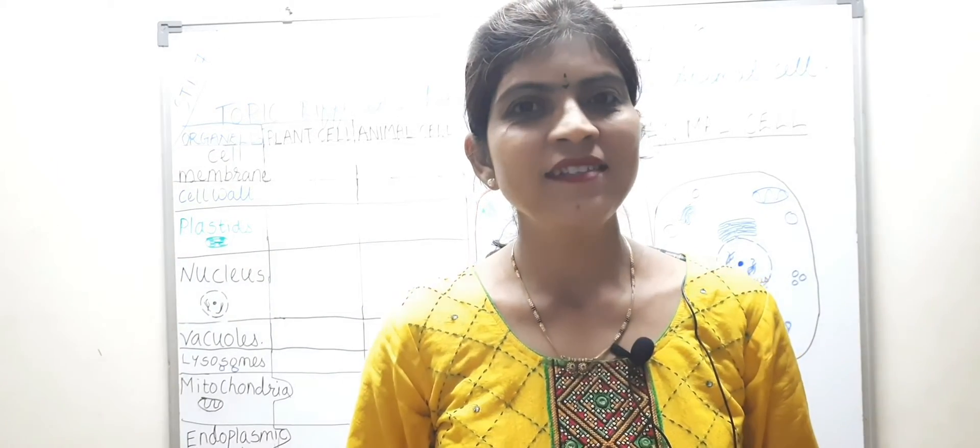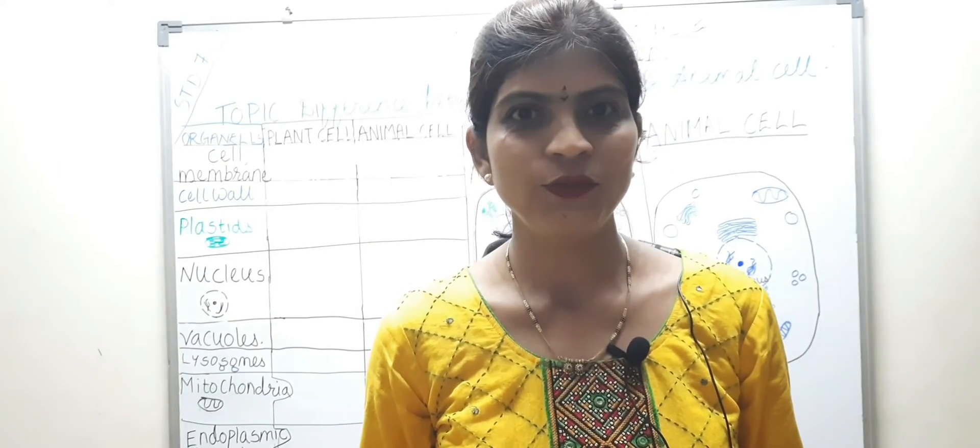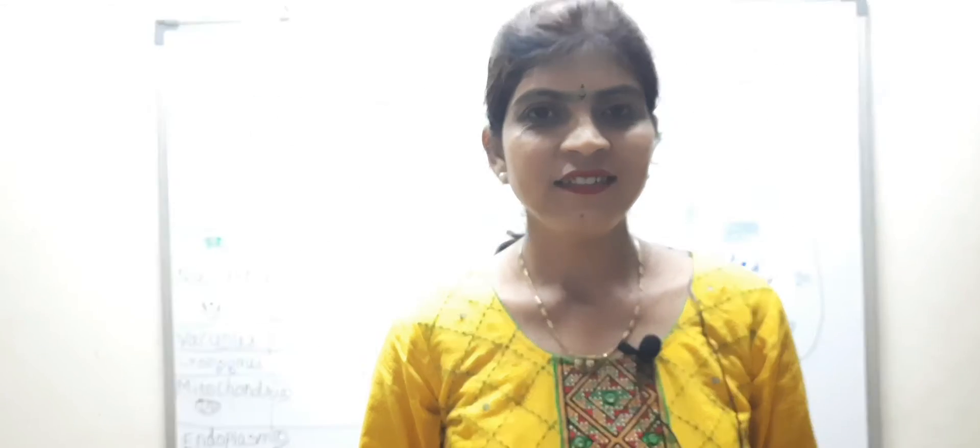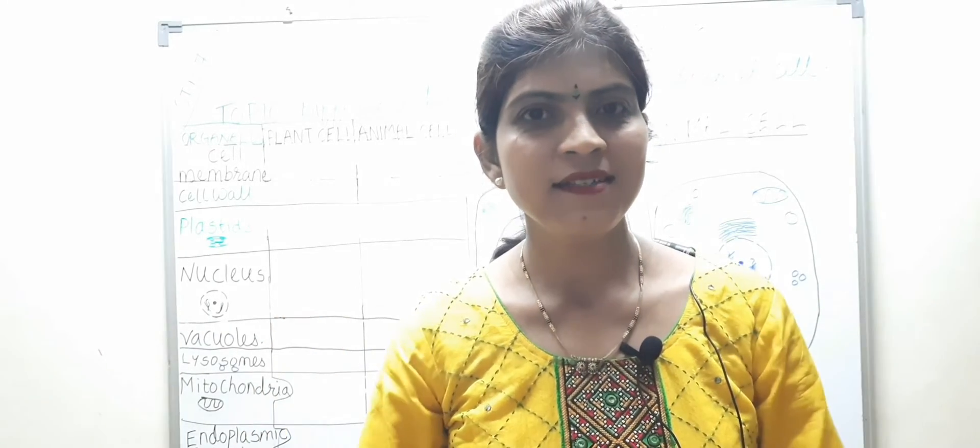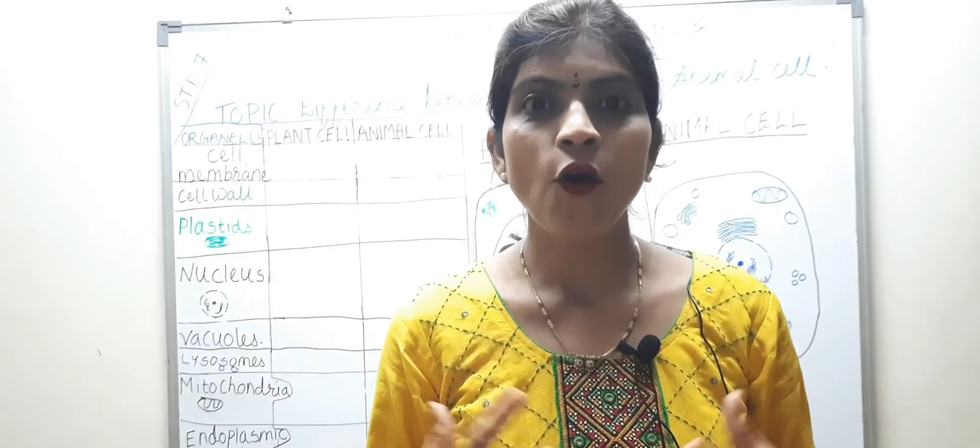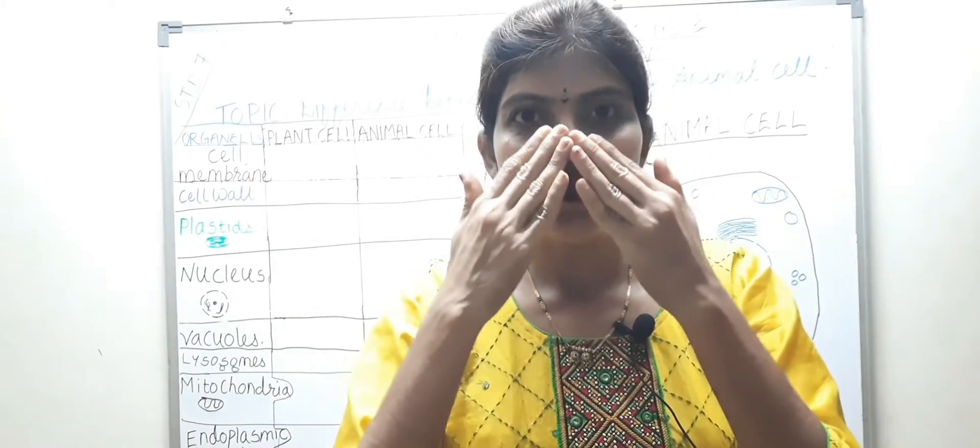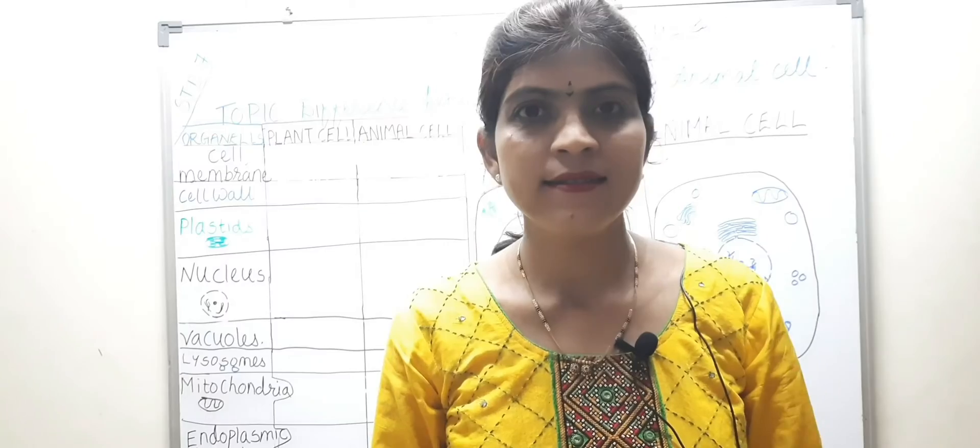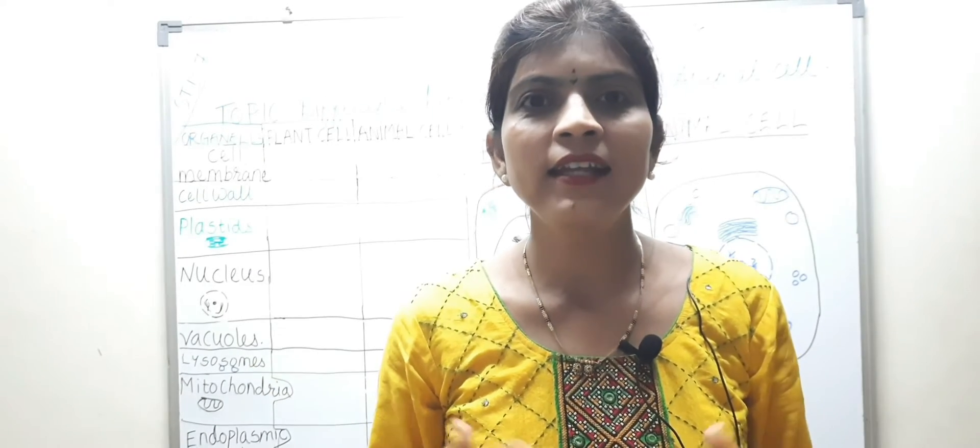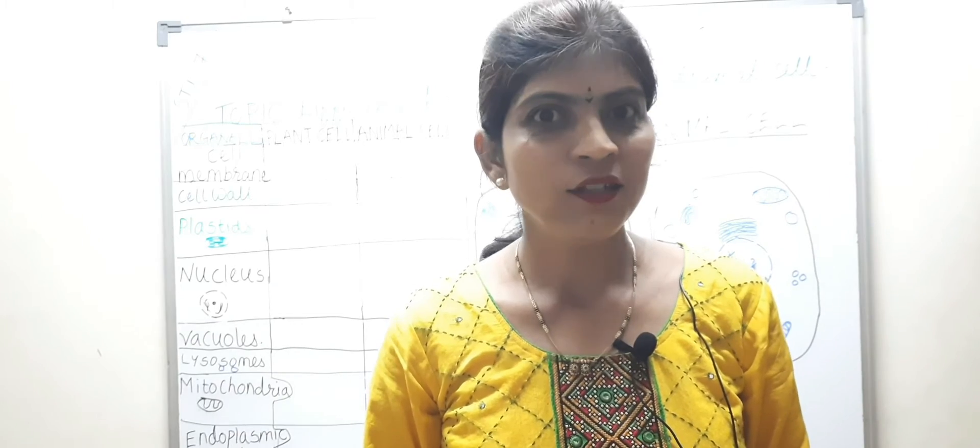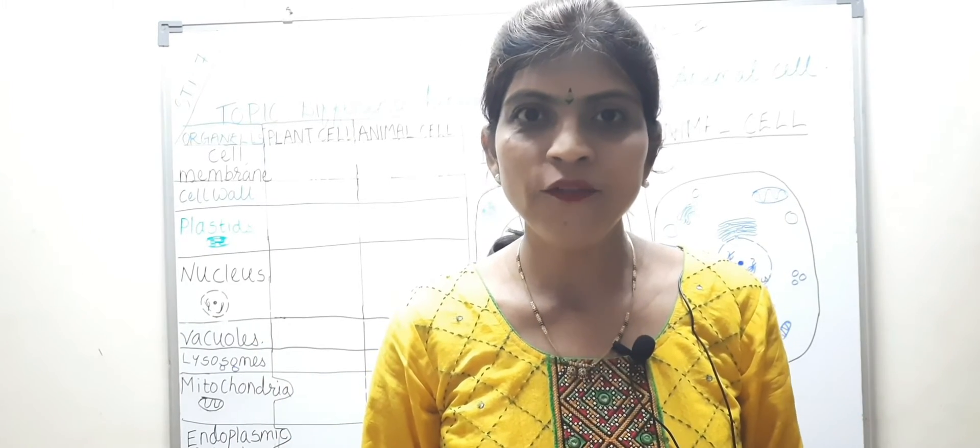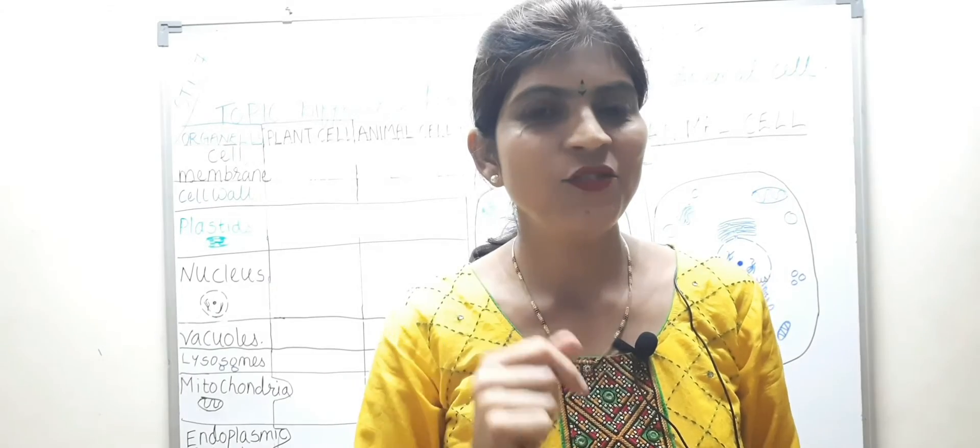Hello dear students, welcome back to Varsha Tutorials. Children, you have already learned that a body is made up of numerous organs - eyes, nose, hands, legs, stomach, intestine, liver, kidneys and so on. And do you know what are these organs made up of?